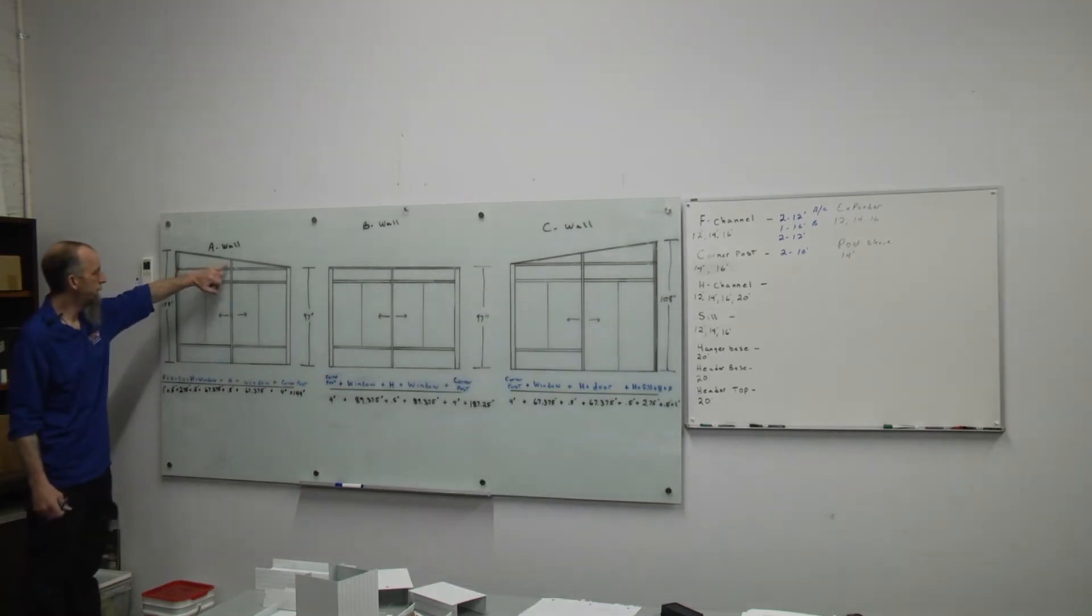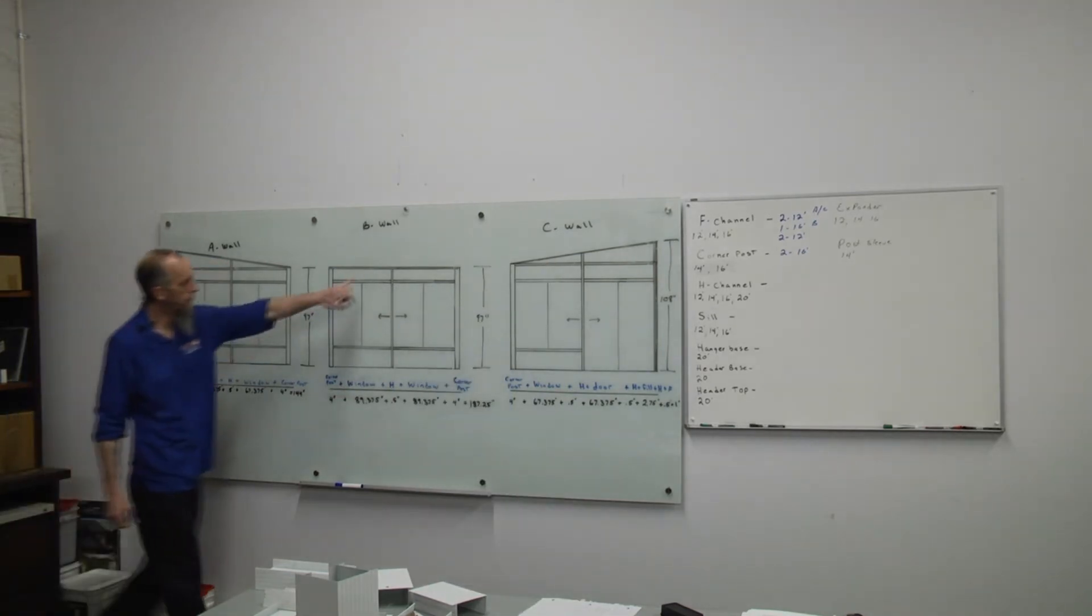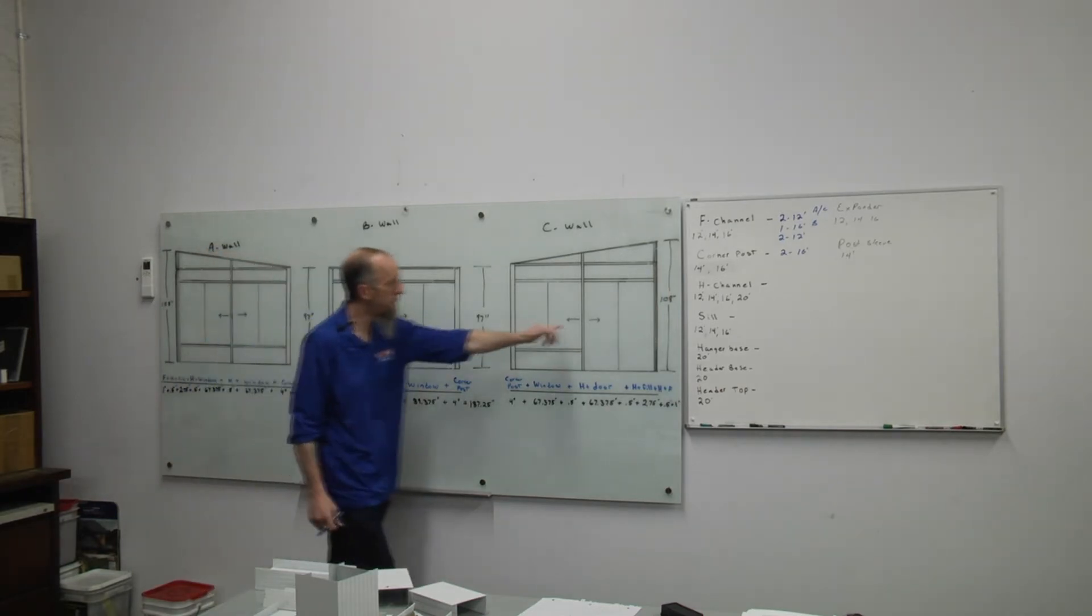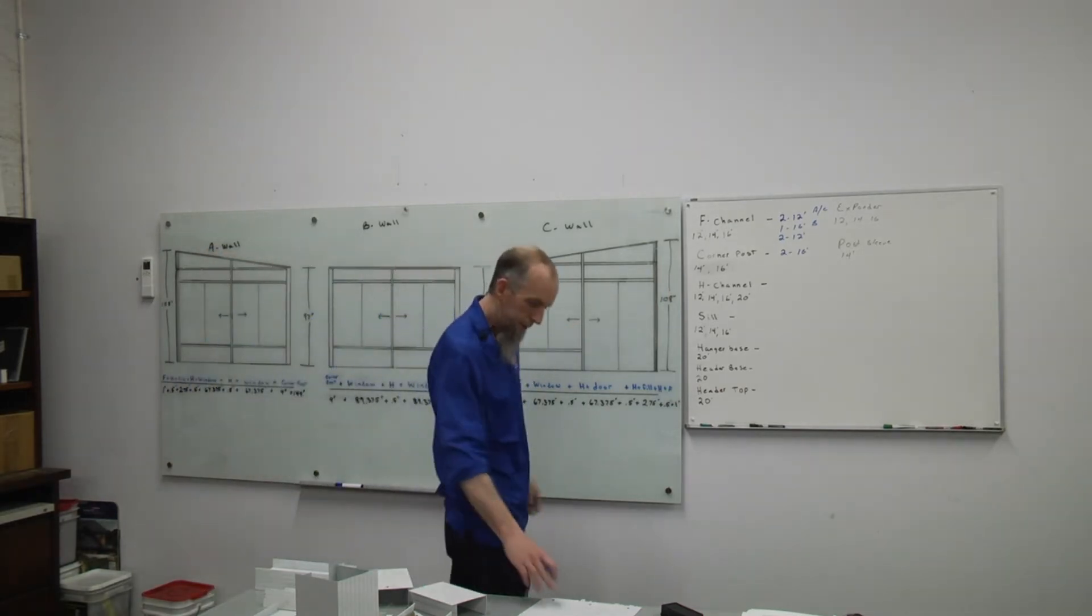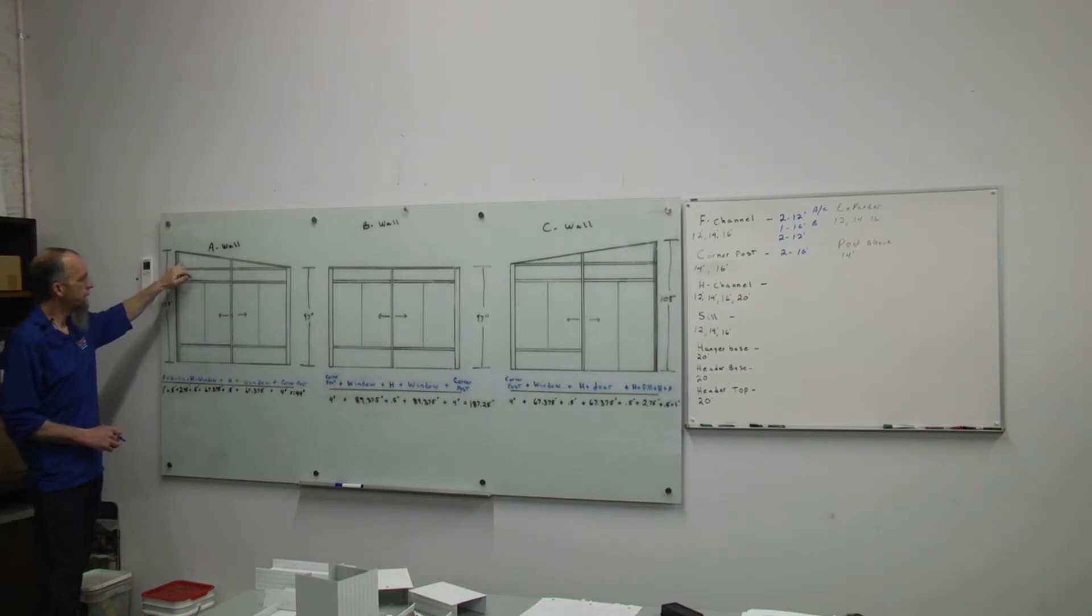Then we'll go on to our H channels. So we have our main upright H's. We have one in the A wall, one in the B wall, one in the C wall. We have two H's at the house. And we have a mid H on here.